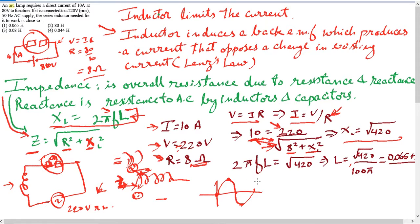is equal to 2 pi FL. So let me use that now 2 pi FL is equal to square root of 420. And since other things are known, I can now find the inductance. The inductance of the inductor. So let me put this 2 pi F to this side. And that will give me frequency is given as 50 Hertz. So 50 times 2 is 100. So I have inductance as square root of 420 over 100 pi. And that comes to around 0.065 Henrys, which is option number one.